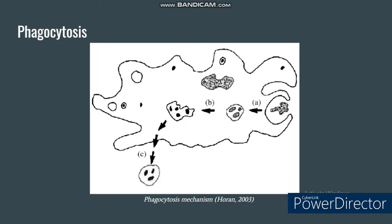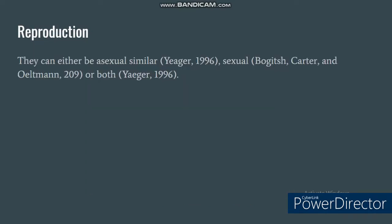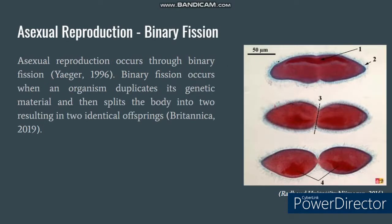The digested food particles are then released to the cytoplasm while the undigested remains are excreted by the organism. For their reproduction, they can either be asexual, similar to flagellates; sexual, like ciliophorans; or both, like apicomplexa. Asexual reproduction occurs through binary fission, which is the process wherein an organism duplicates its genetic material and then splits the body into two, resulting in two identical offspring.